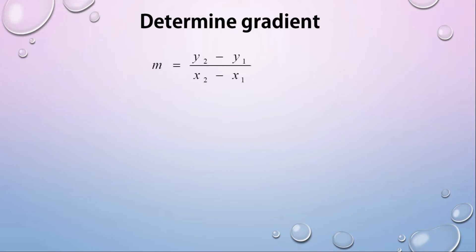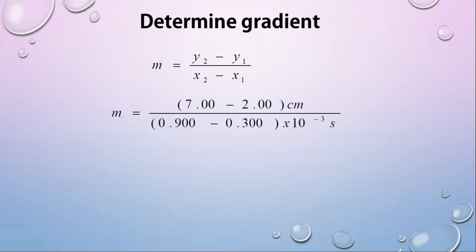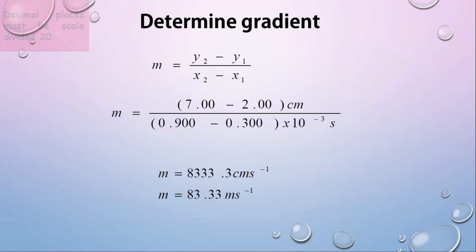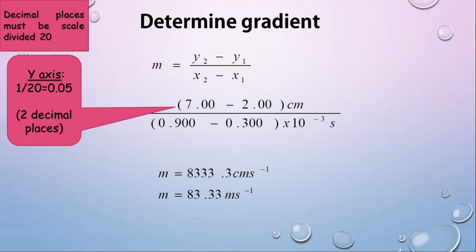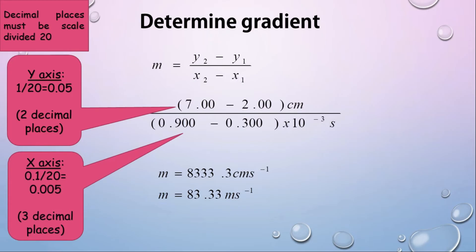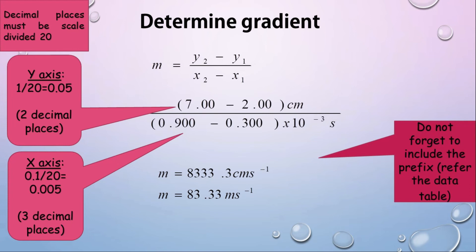Using the formula, we can calculate the gradient from the graph. Here the gradient is 83.33 meters per second. Don't forget about decimal places — decimal places must be the scale divided by 20. For the y-axis: 1 divided by 20 equals 0.05, meaning two decimal places. For the x-axis: 0.1 divided by 20 equals 0.005, which is three decimal places. Do not forget to include the prefix and convert to SI units.